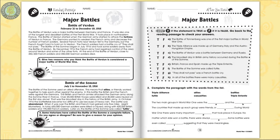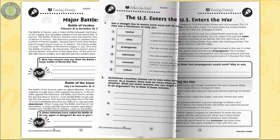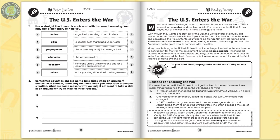Become familiar with the Triple Alliance and the Triple Entente before being transported to the Battle of the Somme. Learn of the events that caused the U.S. to enter the war, from the sinking of the Lusitania to a decoded plan to attack the mainland.